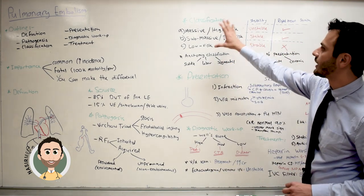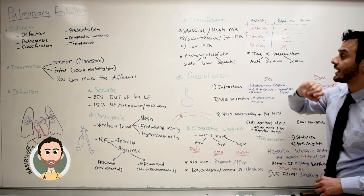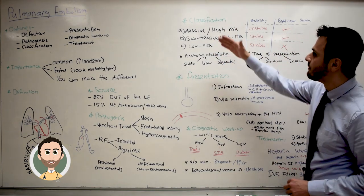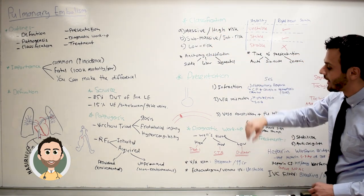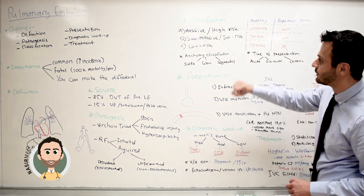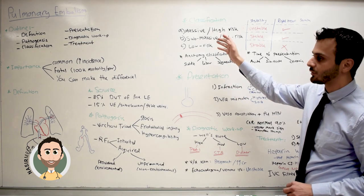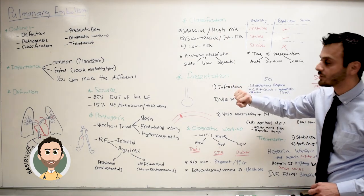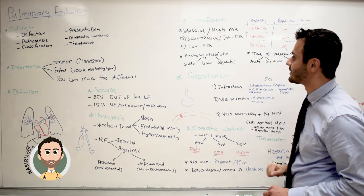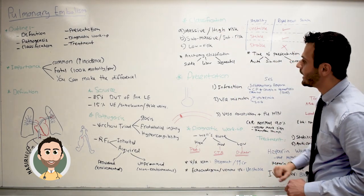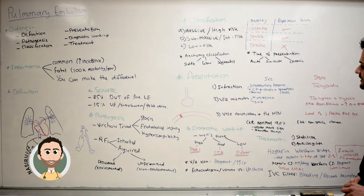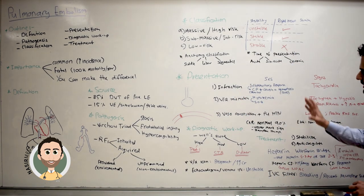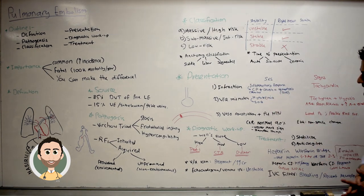Then we moved on and talked about the classification of pulmonary embolism — massive, submassive, and low risk — and how the classification affects the treatment and diagnostic workup.